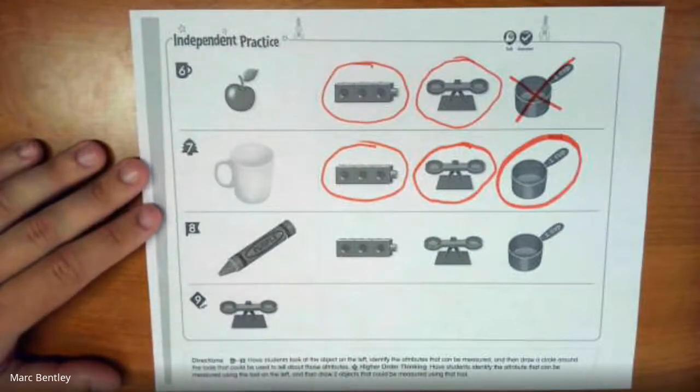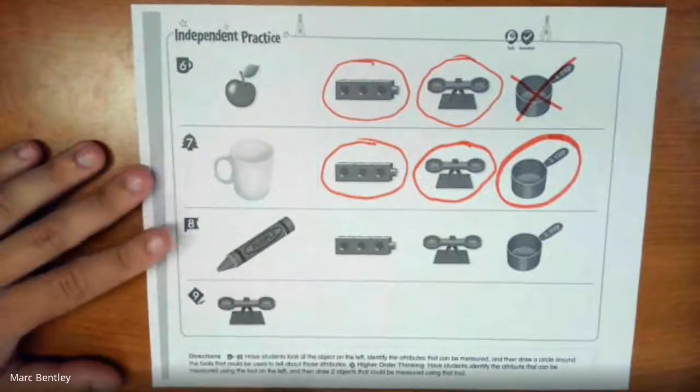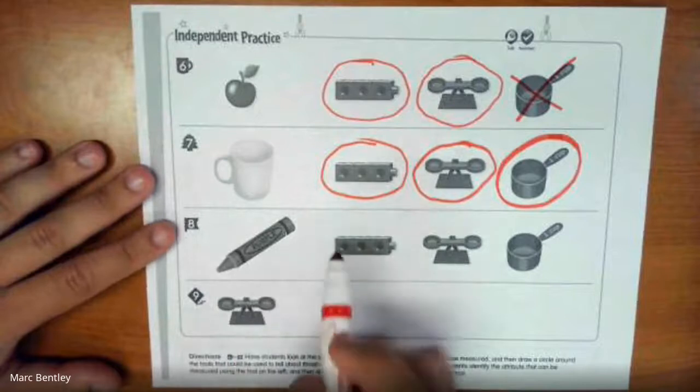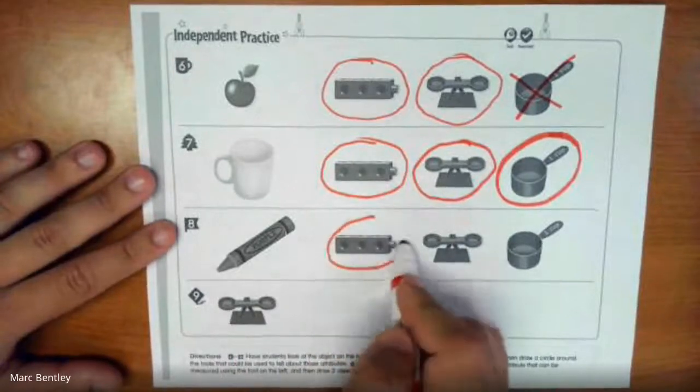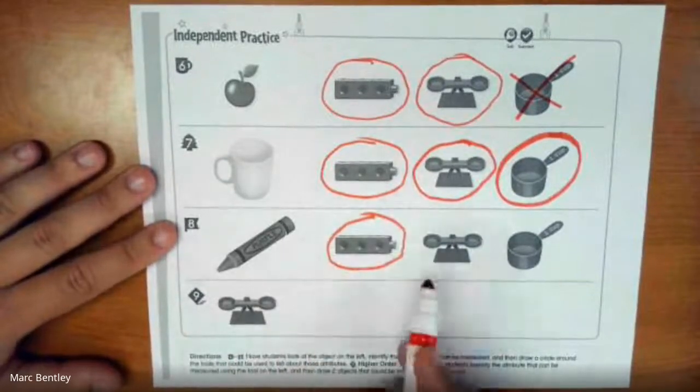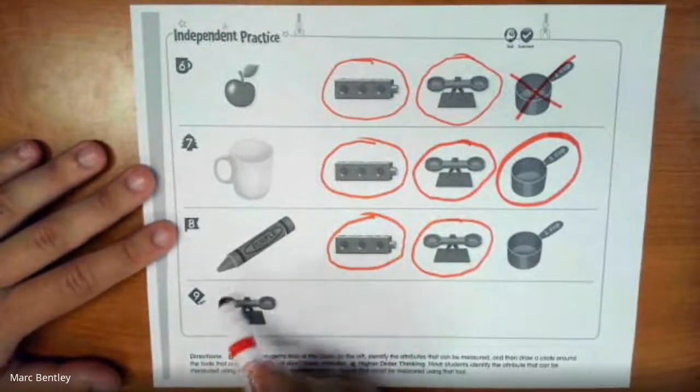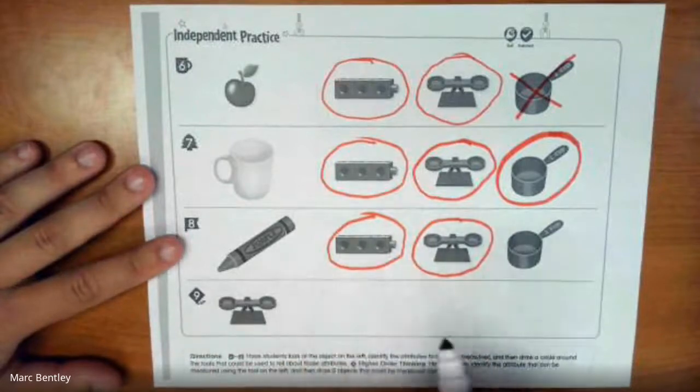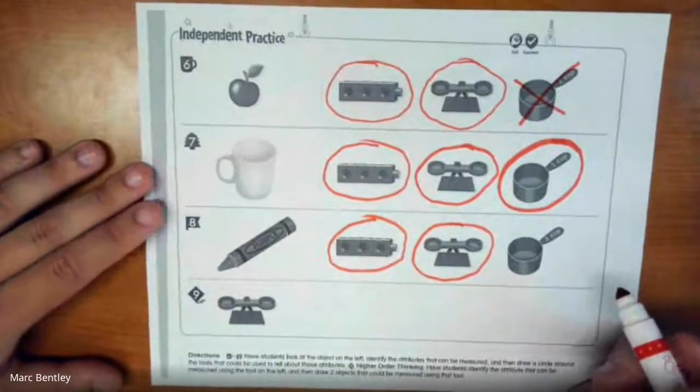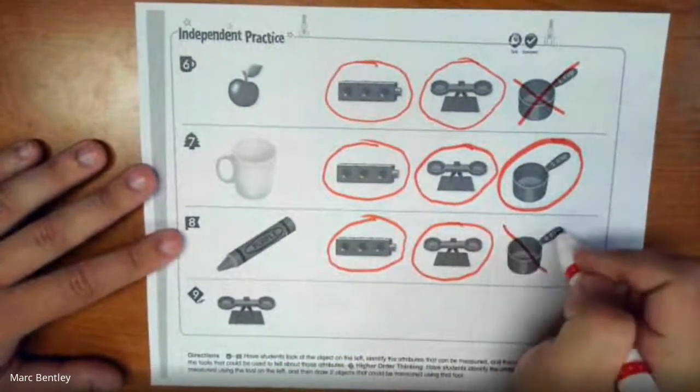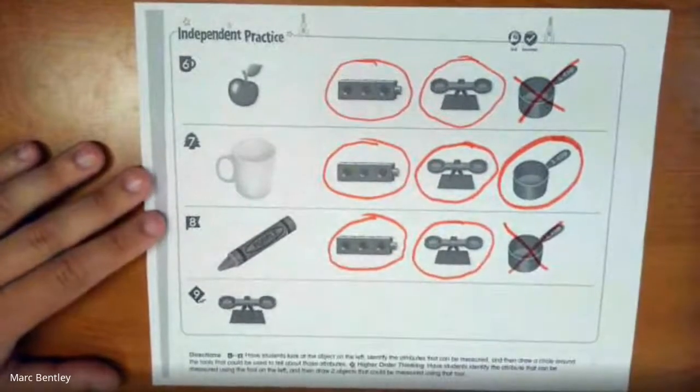Number eight, we have a crayon. Could we measure the crayon's length? Yeah, I'm going to circle that. We could also measure its weight. But because it is a solid object we can't fill it up, so therefore we cannot measure its capacity, so I'm going to put an X through there.